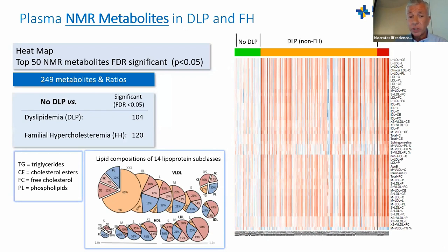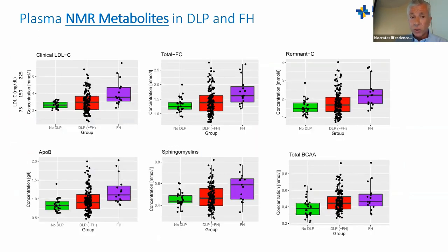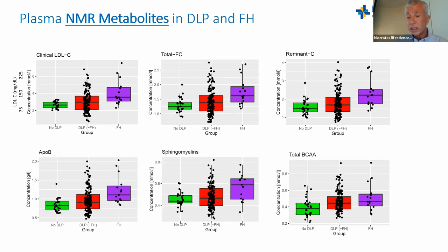For the NMR analysis of the same group, there are quite significant changes. NMR examines lipid compositions across 14 lipoprotein subclasses — quite complex. We saw 104 significant changes in dyslipidemia versus no dyslipidemia, and 120 changes between FH and dyslipidemia, including elevated LDL-C, total free cholesterol, remnant cholesterol, ApoB, and sphingomyelins consistent with Quant 500 findings.